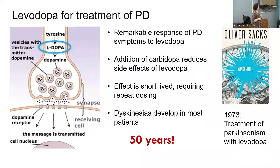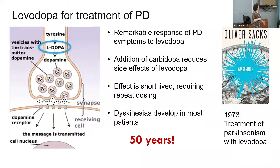Carbidopa-levodopa is actually two separate compounds. Carbidopa reduces the conversion of L-DOPA to dopamine in the gut — which causes nausea — so before carbidopa was developed, patients just had to take levodopa and then be ill for an hour before feeling better. Carbidopa was developed to reduce that nausea. The effect of levodopa is short-lived, which is why even at the beginning of the disease you have to take the medication three times a day.